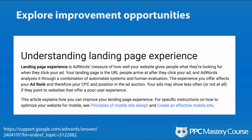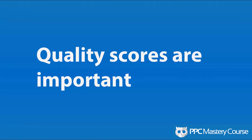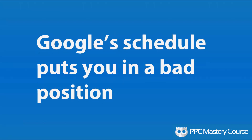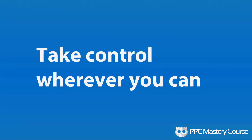I don't know — I'm stumped. This is more of a rant than a definitive conclusion. But I will tell you: quality scores are important, but fixating on them puts you too much on Google's schedule, and Google's schedule puts you in a bad position because you're waiting for permission from Google. You need to take control wherever you can in your campaigns. The people putting budget into AdWords are not going to understand that a quality score display wasn't showing — they're going to care about why things aren't improving. So take control whenever you can.